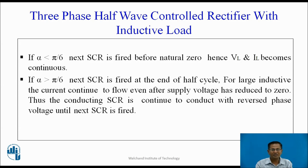If alpha is less than pi by 6, the next SCR is fired before natural zero. Hence, VL and IL become continuous. If alpha is greater than pi by 6, the next SCR is fired at the end of the half-cycle. For large inductive load, the current continues to flow even after the supply voltage has reduced to zero. Thus, the conducting SCR continues to conduct with reversed phase voltage until the next SCR is fired.